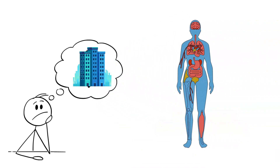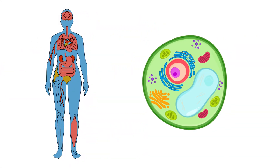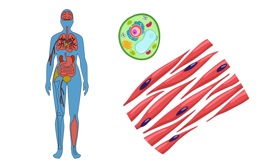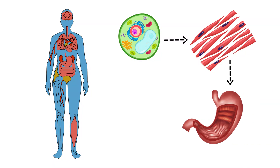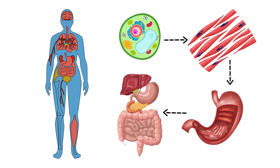Our bodies are organized in a very similar way. Life begins at the smallest unit, the cell. Cells join to form tissues, tissues build organs, and organs work together in organ systems.